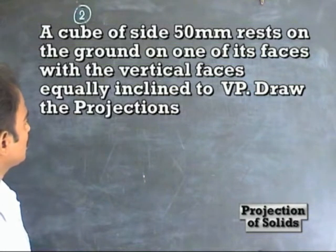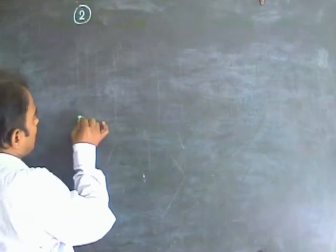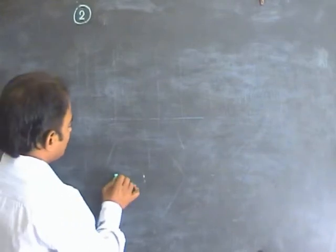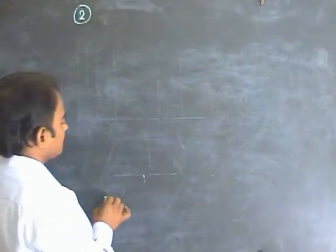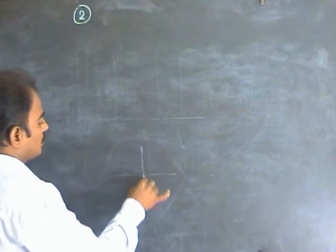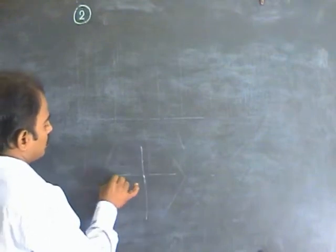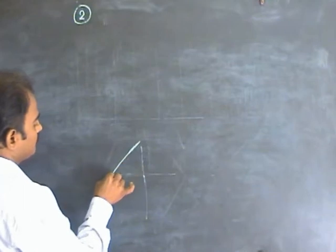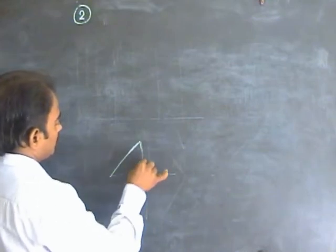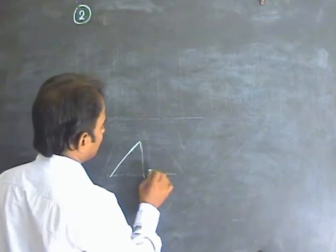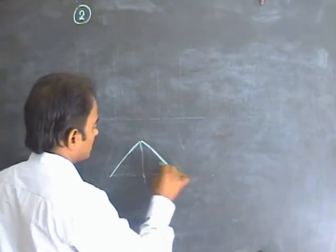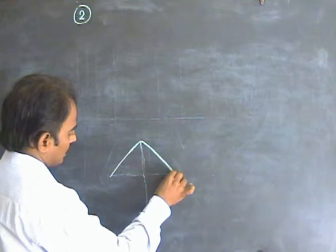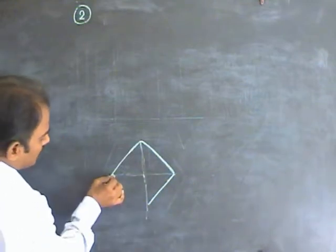It is on the ground, so check the XY line. Draw that cube — the projection is a square in visible position. First, we draw a horizontal line, then draw a 45-degree line. Put the other half. We will get a square as the projection in the top view of the cube.